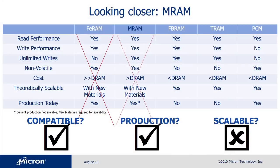MRAM — no offense — is a great technology, but I have trouble fundamentally with the scalability of the current architected MRAM. There's a tremendous amount of effort in the industry to look at ways to scale that technology and make the cell size compatible with DRAM. But with the current technology that's in production, I'd say there are some roadblocks to scalability. So it's compatible, it's in production, but scalability going forward requires a tremendous amount of engineering work.